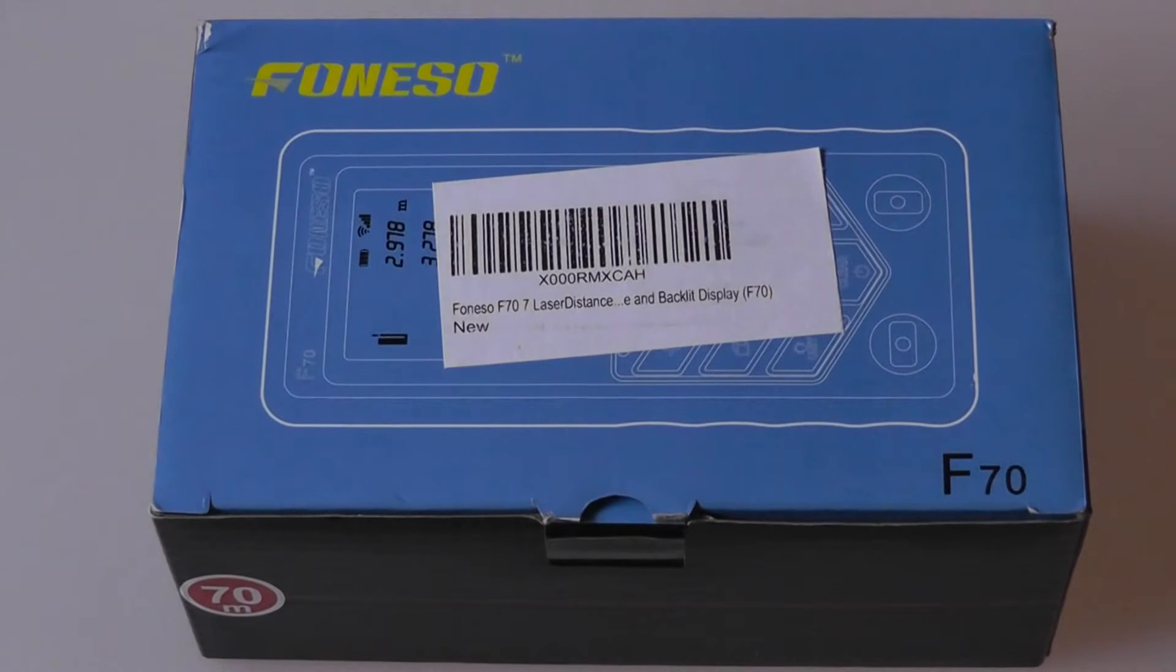Hey folks, here at OSReviews. You're watching our video review of the Fonoso F70. As the name suggests, this one is accurate up to 70 meters and it sells on Amazon for 50 bucks.